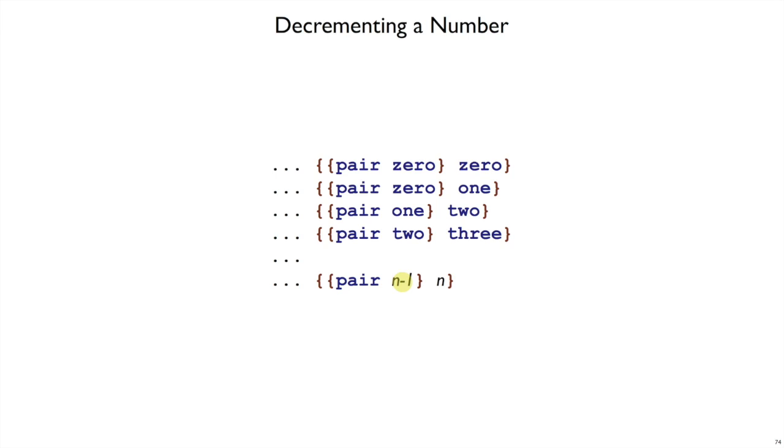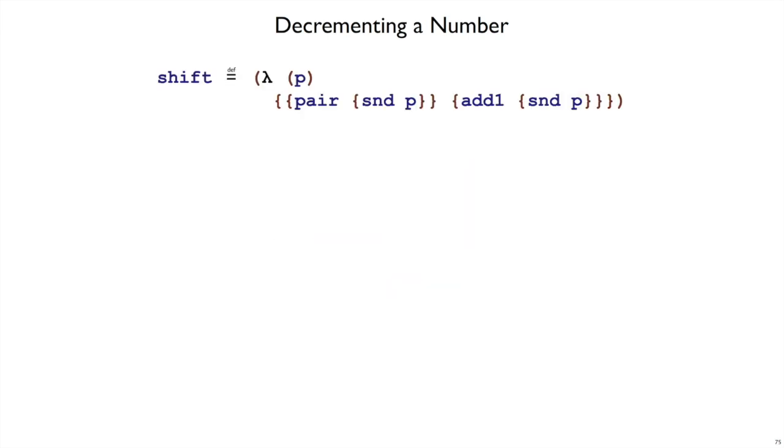So, to put this into functions that work, that sequence that I just showed you is a sequence of using shift. Shift takes a pair. It makes a new pair where it uses, as the new first part, the old second part. Meanwhile, it adds to the old second part to get the new second part.